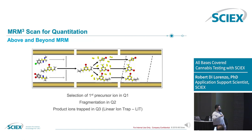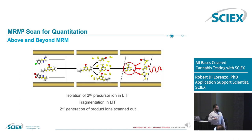In traditional MRM analysis, you isolate an ion in Q1, fragment it in Q2, see all your fragments, then in Q3 you isolate a fragment and scan that through the detector. But what the Q-Trap allows you to do is trap all of those fragment ions, then isolate one of those fragments, selectively re-fragment it, and scan out the secondary fragment ions.